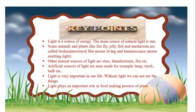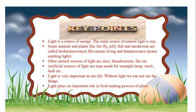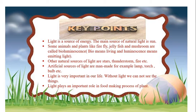Key points: Light is a source of energy. The main source of natural light is the sun. Some animals and plants, like firefly, jellyfish, and mushroom, are called bioluminescence. Bio means living and luminescence means emitting light. Other natural sources of light are stars, thunderstorm, and fire. Artificial sources of light are man-made, for example, lamp, torch, bulb, etc. Light is very important in our life — without light, we cannot see things. Light plays an important role in the food-making process of plants.